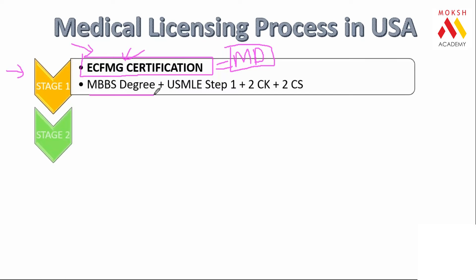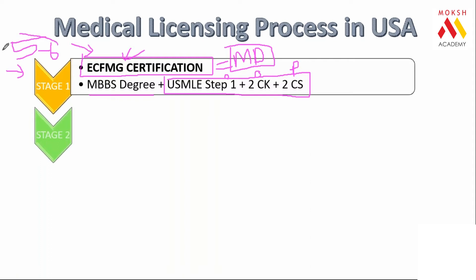To get ECFMG certified, you submit your MBBS passing marks along with scores from Step 1, Step 2 CK, and Step 2 CS, which is a practical examination. Parallel to your med school, you will appear for all of these examinations. The time spent in stage one is five to six years of your career.